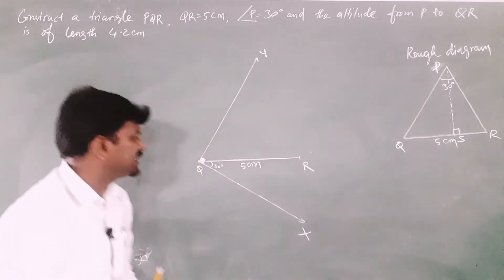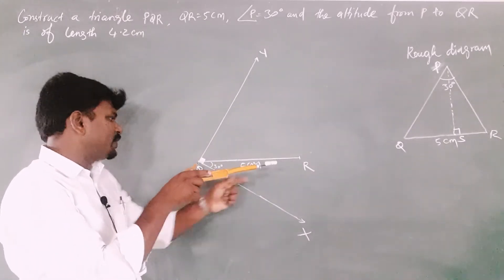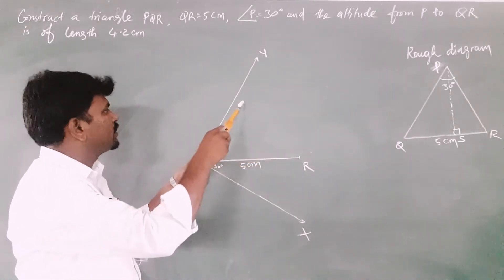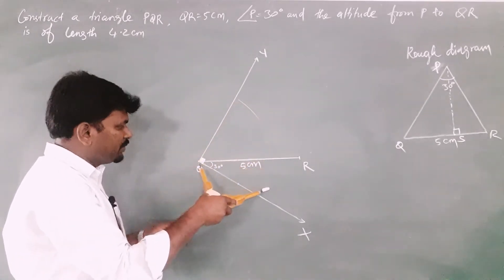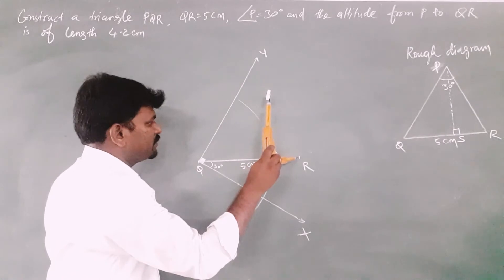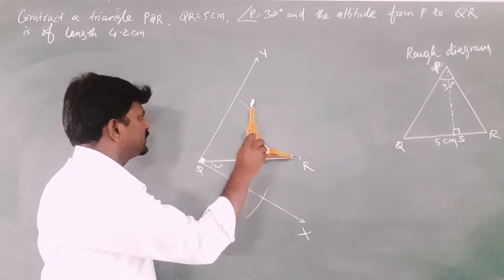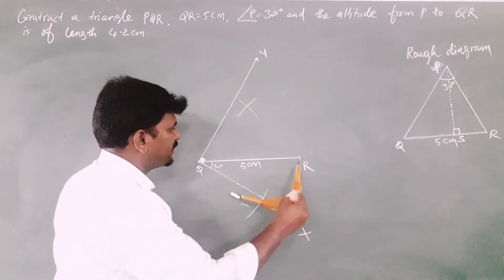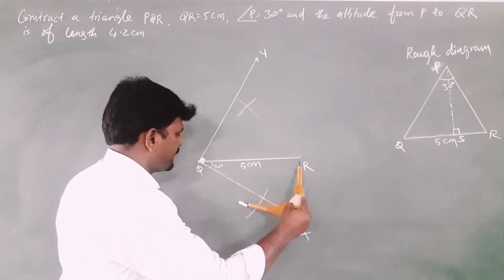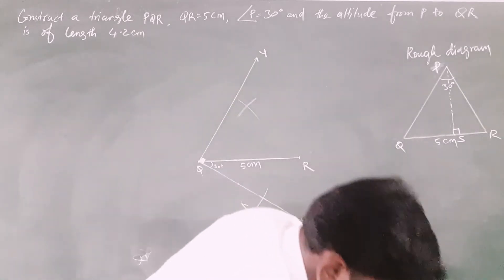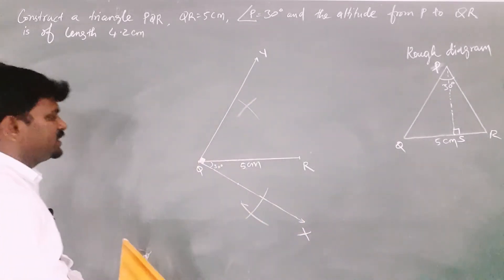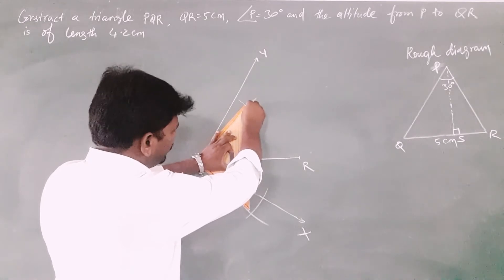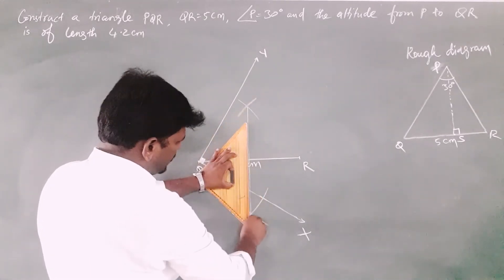Next, draw the perpendicular bisector of the line segment QR. Take more than half the length of QR and cut arcs above and below the line. Place the compass needle at R and again cut arcs above and below the line segment. Then draw a smooth straight line passing through the points of intersection of the arcs.